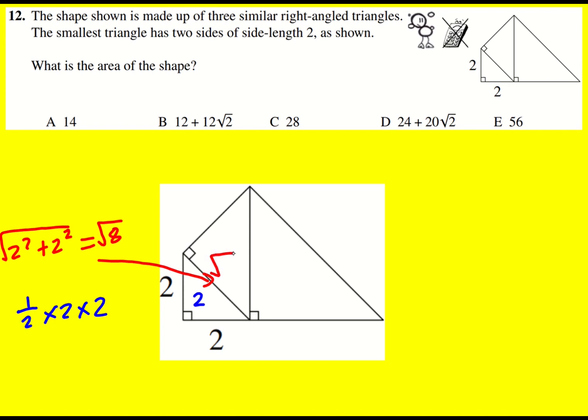I'll keep it in surd form like that I think. And we're told because they're similar, that means that basically the base and the height will be the same and therefore I can also make this one root 8.